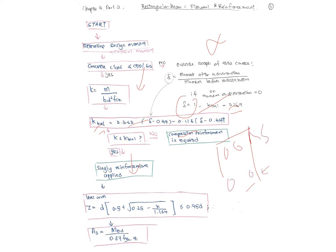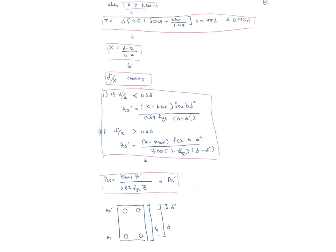If single reinforcement is required, calculate the lever arm z and then As. If k is greater than k_balance, compression reinforcement is needed. Calculate z using the given equations — it must be less than 0.95d — then calculate x using the equations.